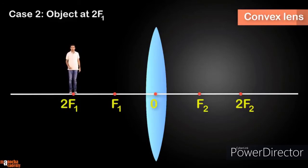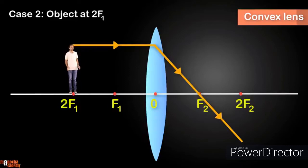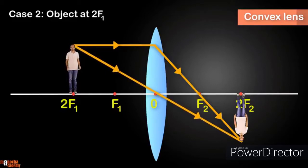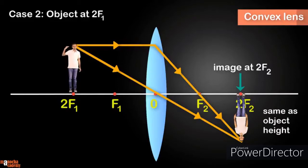For case two, the object is standing at 2f1. Using rule one, the ray parallel to the principal axis refracts through the focus. Using rule two, the ray through the optical center goes straight undeviated. Notice the symmetric nature of the diagram: the object is at 2f1 and the image is formed at 2f2. The image height equals the object height, and the image is real and inverted.